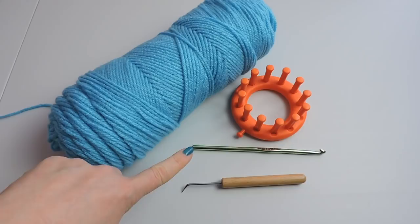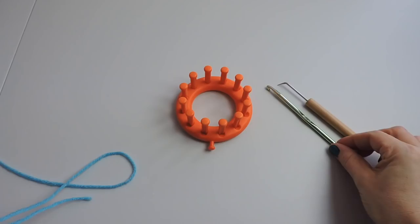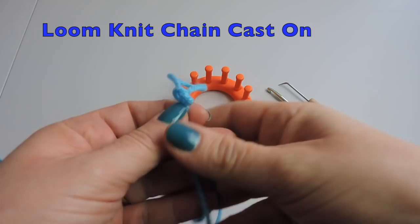For this project you will need a skein of yarn, a loom knit tool, a crochet hook, and I'm using a flower peg 12 peg loom.